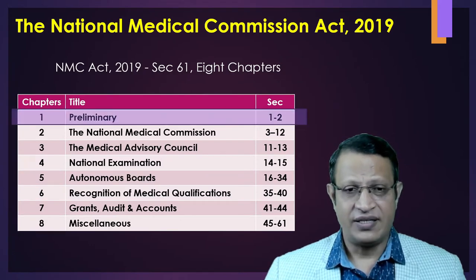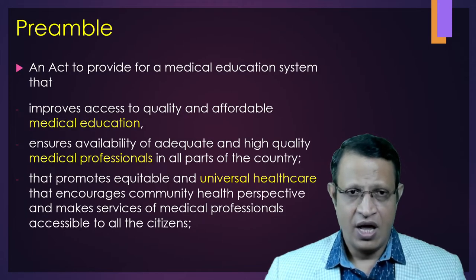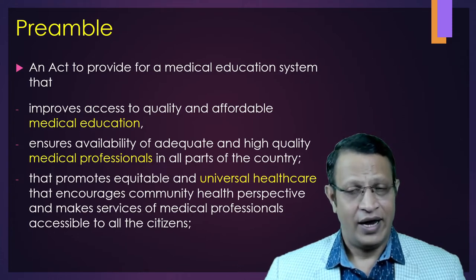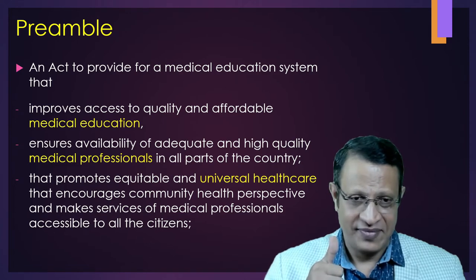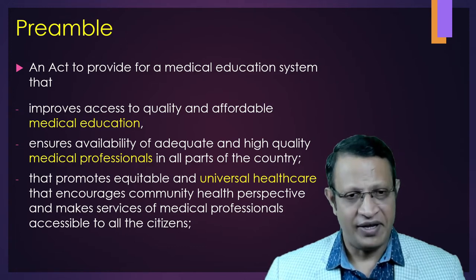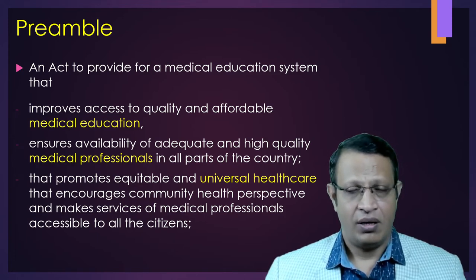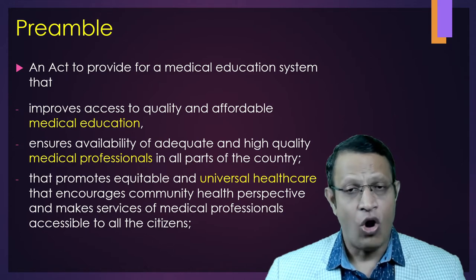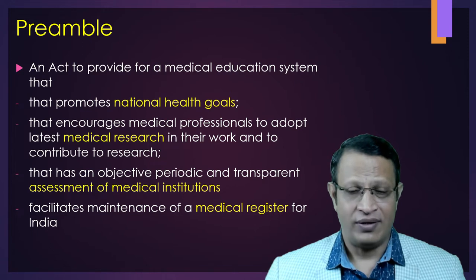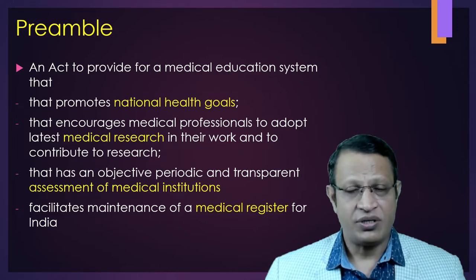Now let's discuss Chapter 1 — the preamble and definitions. The preamble clearly discusses improving the medical education system, how to improve access to quality and affordable medical education, and the availability of adequate and high-quality medical professionals across the country. It also discusses promoting equitable and universal health coverage, keeping the concept of community health perspective, and making services of medical professionals accessible to all citizens. It also focuses on promotion of national health goals and encourages medical professionals to adopt latest medical research and contribute to research.